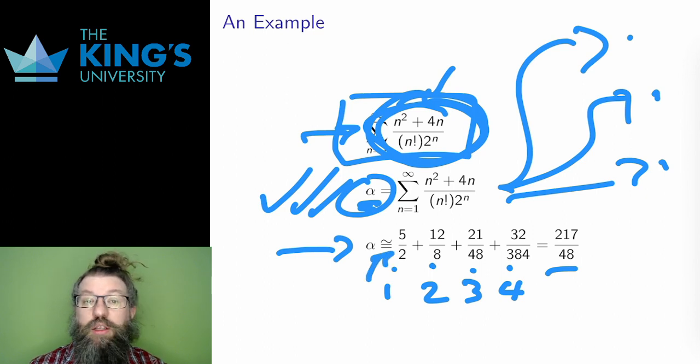If I add more terms, I will get a closer approximation. And this is the best way to get a representation of alpha in somewhat familiar numbers.